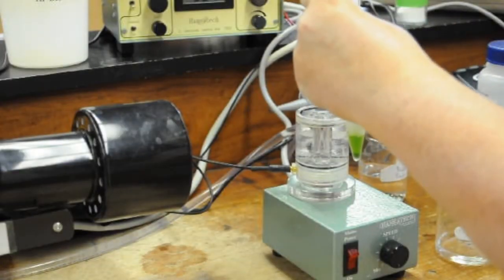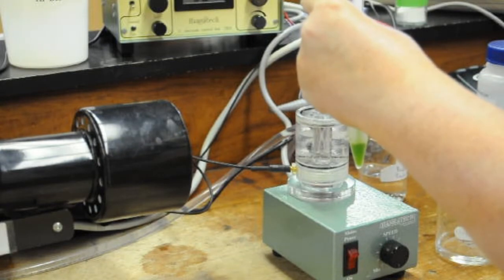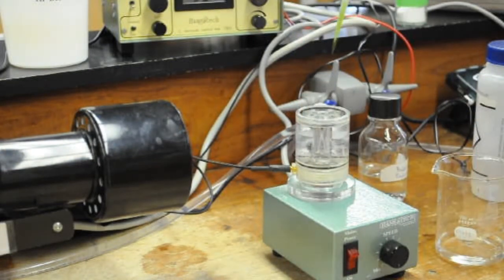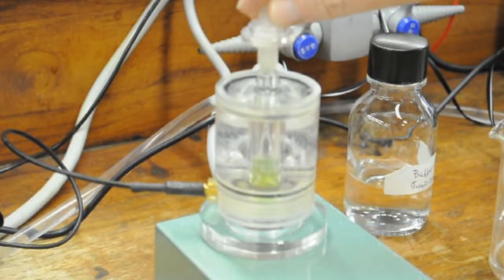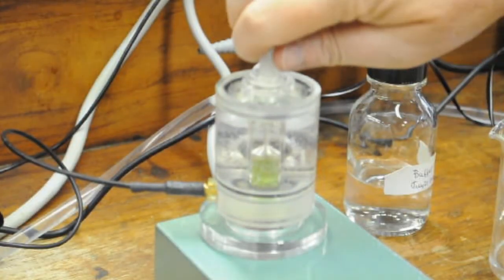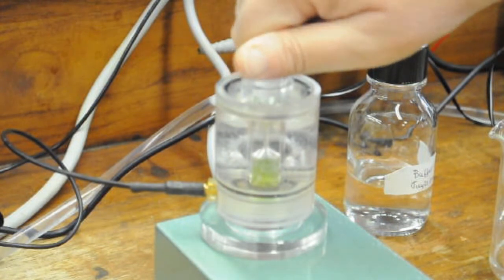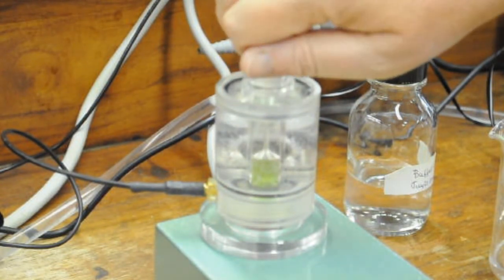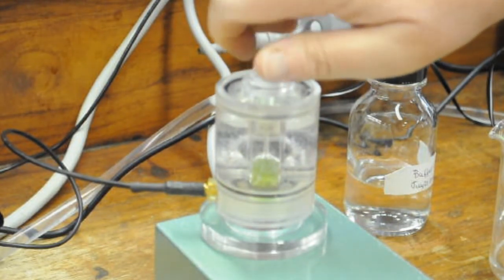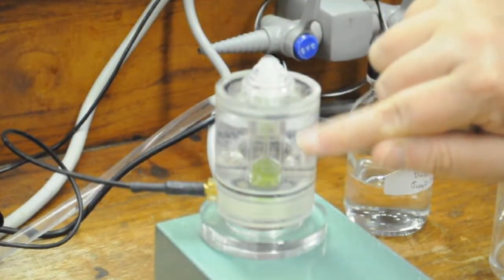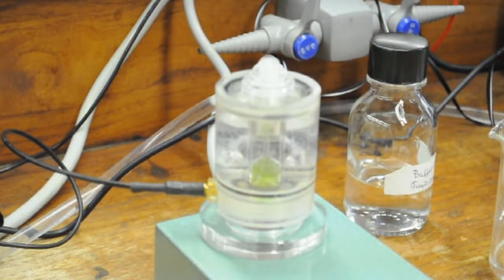Before adding your cells or chloroplasts to the cuvette make sure they are well mixed as they tend to settle out. You want to make sure you use a consistent sample in every experiment. Now insert the cuvette plunger into the opening. Once inserted the plunger is moved up and down using its screw. Lower the plunger until the dome is completely full of sample and the sample is pushing up into the threads of the screw. This is critical for you to get accurate measurements of O2 exchange.